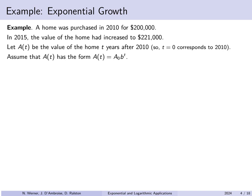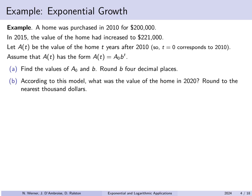Here's an example. A home is purchased in 2010 for $200,000. In 2015, the value of the home was $221,000. Let a(t) be the value of the home t years after 2010, so t = 0 corresponds to 2010 itself. Assume a(t) = a₀ · bᵗ. Since t = 0 corresponds to 2010 and the home was worth $200,000 then, a₀ is $200,000.